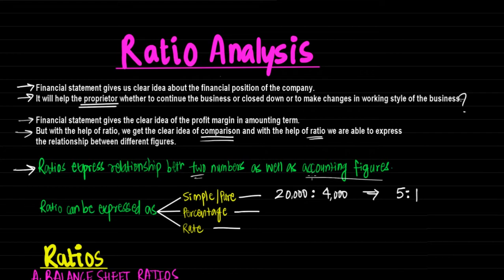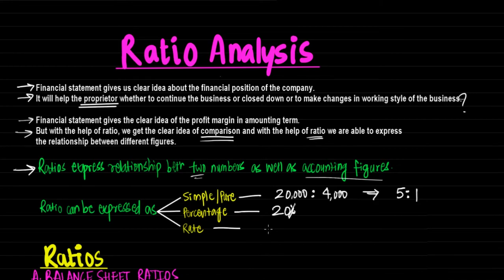For percentage: if gross profit is Rs 200 and turnover is Rs 1,000, then 200 divided by 1,000 into 100 comes to 20%. So this 20% depicts the ratio between gross profit and turnover. Third is rate: if stock is converted into sales six times in 12 months, we can say the rate at which stock is converted into sales is once in 2 months. This rate is also nothing but a ratio.